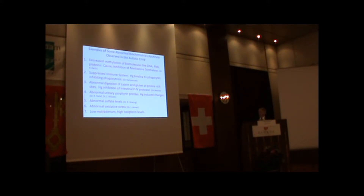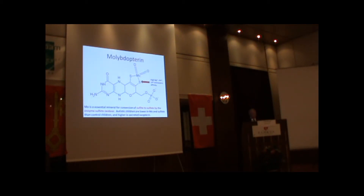So we have the low molybdenum and high neoterium levels found in these children. And I'm going to now present to you why low molybdenum and abnormal sulfate levels are involved.